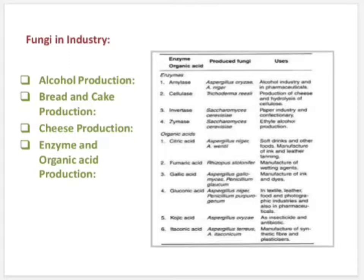Bread and cake production. During alcohol fermentation by yeast, carbon dioxide is released as bubbles and is used in the baking industry to make breads and cakes spongy in appearance. Now, cheese production. Some species of Penicillium like Penicillium roqueforti and Penicillium camemberti are used in the production of Roquefort and Camembert cheese by hydrolysis of fats and to develop specific flavor to the cheese.